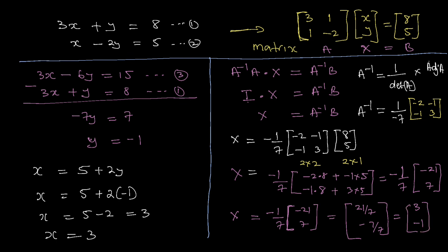We can see x is the matrix of x and y, giving x equals 3 and y equals minus 1 — the same answer as the simultaneous equation method. That is the application of the inverse of a matrix. We use it where division is required, since we cannot divide in matrix operations, but instead use the inverse to solve division problems.